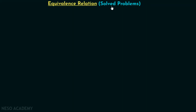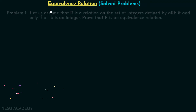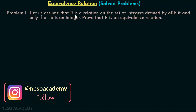In this presentation, we will discuss some problems related to equivalence relations. Let us assume that R is a relation on the set of integers defined by A R B if and only if A minus B is an integer. So we have a relation R.